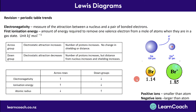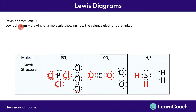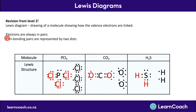Welcome back to chemistry 3.4. This topic is Lewis diagrams — a bit of revision from level 2. Lewis diagrams are drawings of molecules showing how the valence electrons are linked. The electrons are always in pairs because we're dealing with orbitals, and each orbital can hold two electrons. Non-bonding pairs are represented by two dots. Here are three examples: PCl3, CO2, and H2S.